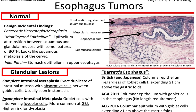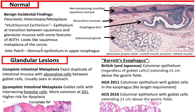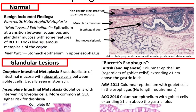Nine incidental findings your endoscopist may give you on biopsies include pancreatic heterotopia, metaplasia, and multilayered epithelium — which is epithelium at the transition between squamous and glandular mucosa with features of both, kind of like squamous metaplasia of the cervix. Inlet patch is stomach epithelium in the upper esophagus. I remember a case where the endoscopist said they sampled esophagus, but it looked like stomach — in hindsight, after feedback from my staff, it was an inlet patch.